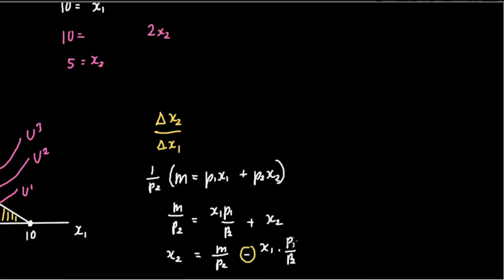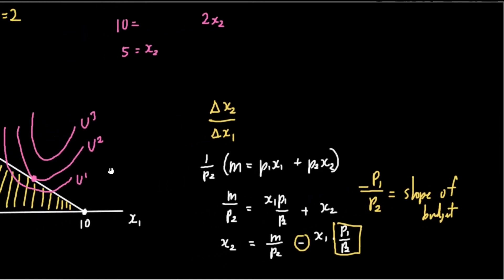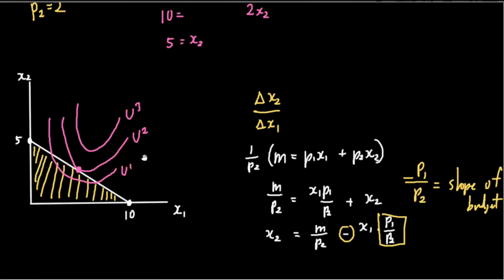And so the slope of our budget line is negative P1 over P2. M over P2 is simply the intercept of x sub two, which we can see on our graph. M, which is 10, over 2, which is the price of good two, would be equal to 5. And we see on the graph that it is indeed equal to 5.